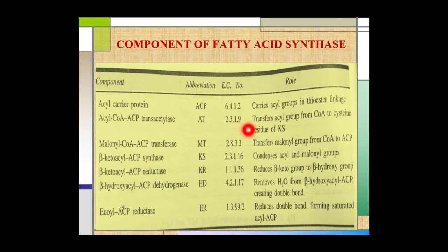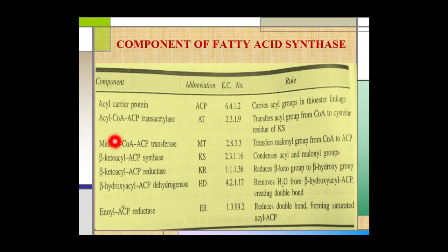The third component is malonyl coenzyme A-ACP transacetylase, abbreviated as MT. This component transfers the malonyl group from coenzyme A to the acyl carrier protein ACP. The fourth component is beta-keto acyl acid synthase, abbreviated as KS. This component condenses the acyl and malonyl groups.